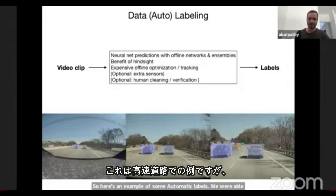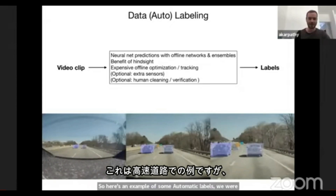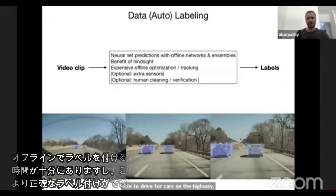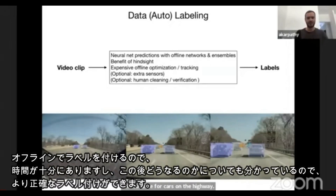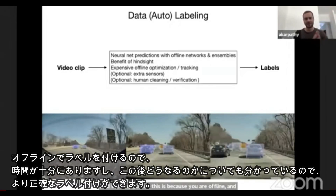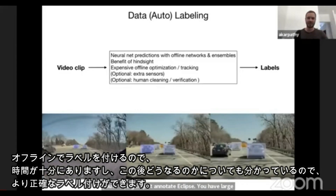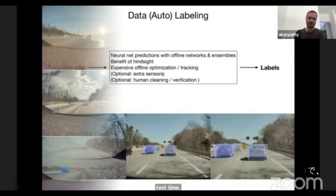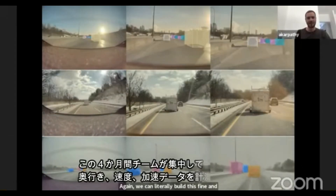Here's an example of automatic labels derived for cars on the highway. Because you're working offline and just annotating a clip, you have a large number of benefits that you don't typically have at test time under strict latency requirements in the car.